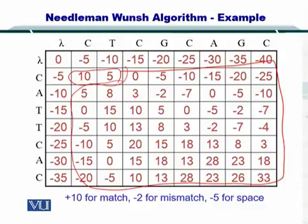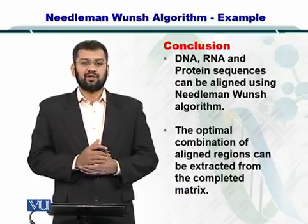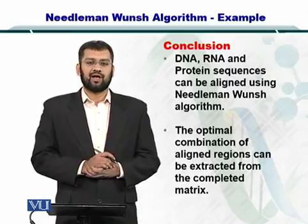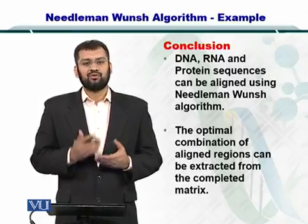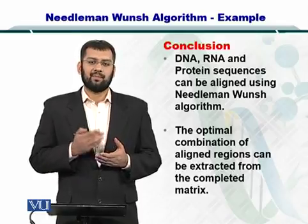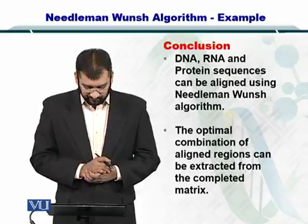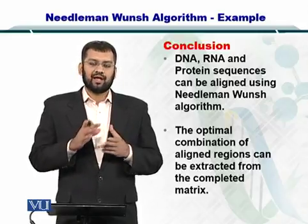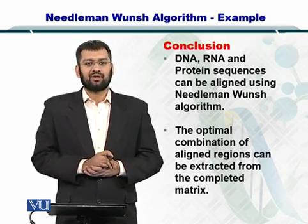Remember that the gap penalty is -5, mismatch is -2, and +10 is for the match. In conclusion, the Needleman-Wunsch algorithm can help you align DNA, RNA, or protein sequences, given that you assign a mismatch penalty, a match reward, and a gap penalty in the scoring scheme. The optimal alignment will be extracted by utilizing this matrix.